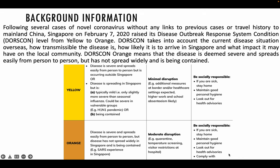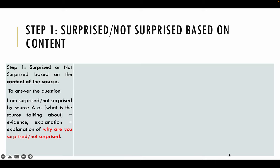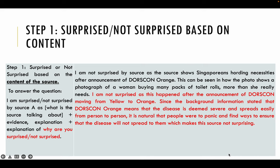Once you're done reading the background information, you can move on to the master source. For today's online lesson, this is the master source — it's a photograph of a woman buying many packs of toilet rolls after the announcement of Dorscon orange. We are going to answer whether or not you're surprised based on content. You need to say whether you're surprised or not surprised by source A, what the source is talking about, the evidence, and the explanation of why you're surprised or not surprised. Because I really read the background information and know this whole Dorscon yellow to orange situation, I know that raising the alert level shows that the whole situation has gotten worse. So I'm pretty much not surprised if people are panicking over how the whole COVID situation has gotten worse.